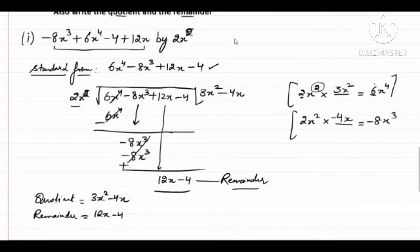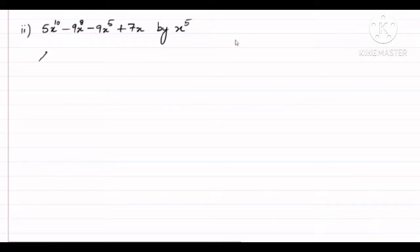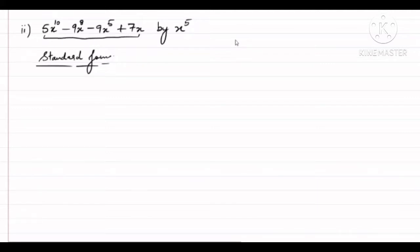Similarly, let's see the second part of this question. First step: write the polynomial in standard form. Looking at the question — we can see the polynomial given is already in standard form, with the maximum power written first, then decreasing. So I will write it as it is.